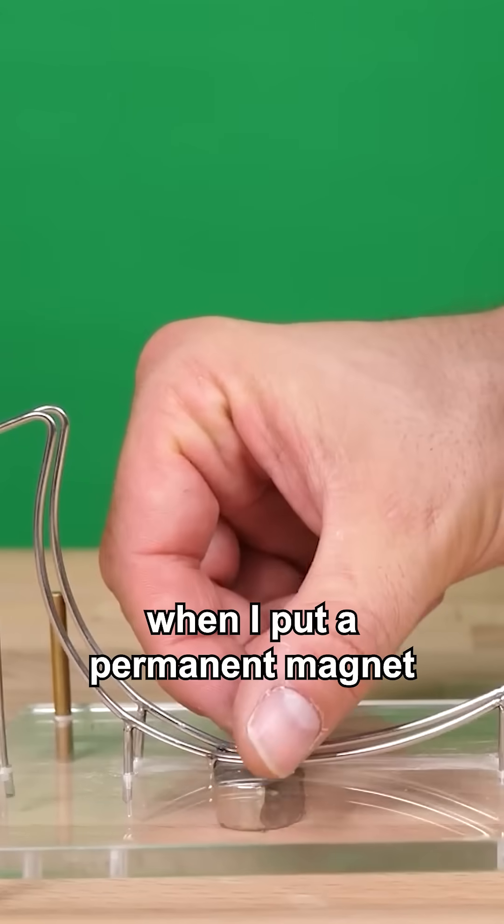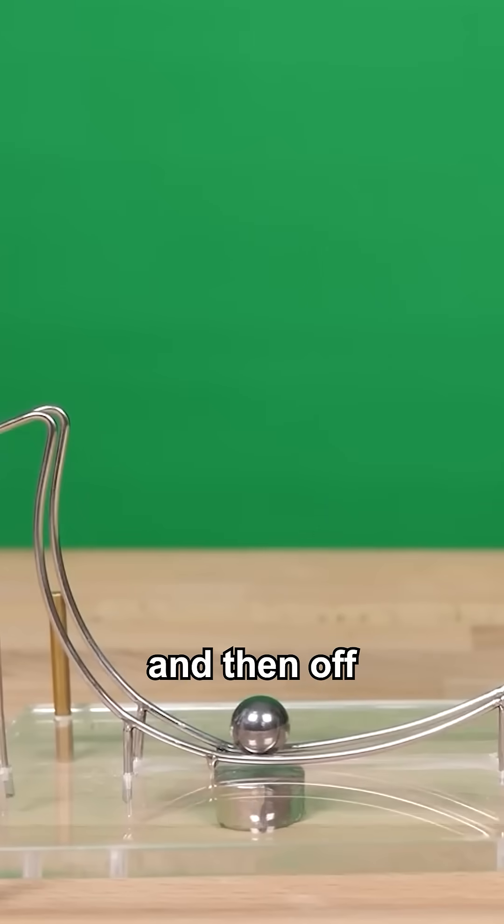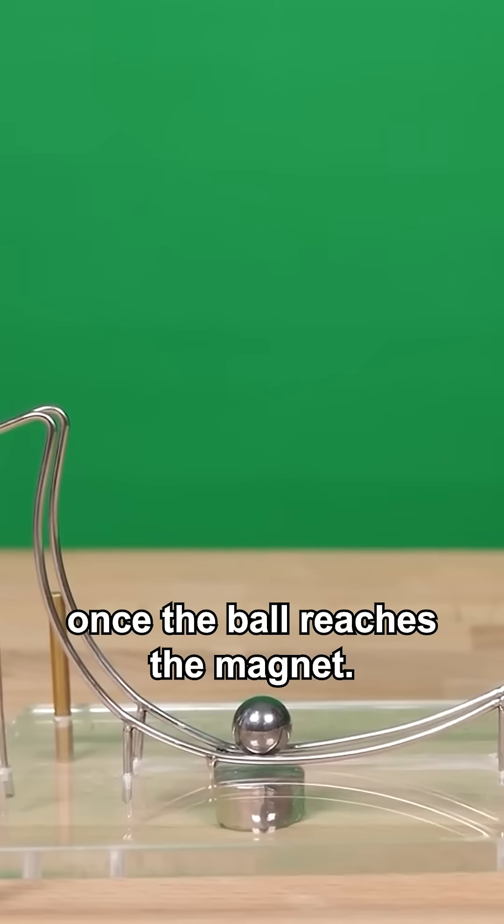This is what happens when I put a permanent magnet in place of the electromagnet. So the electromagnet needs to be on during the approach and then off once the ball reaches the magnet.